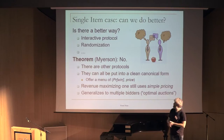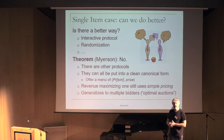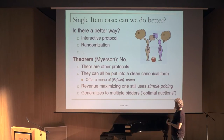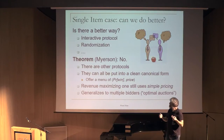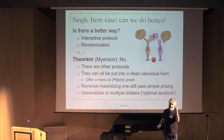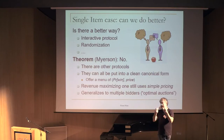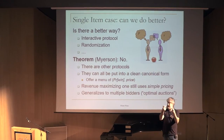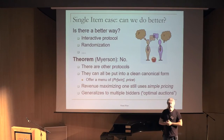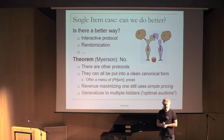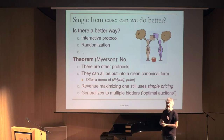It turns out — an interesting theorem — that there are other protocols, and moreover, they're not equivalent to just putting a price. But you can take all complicated protocols and put them into a very simple canonical form: a menu. Each entry gives a probability of getting the item and a price. The buyer chooses the menu entry that maximizes their utility. Myerson's theorem says every protocol is equivalent to one of these menus.